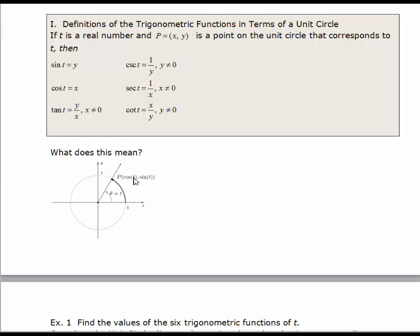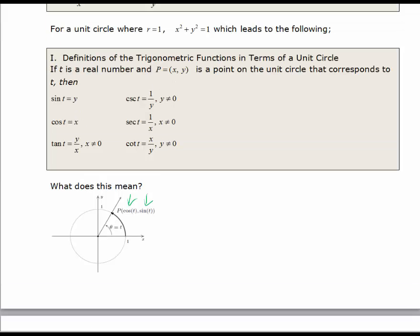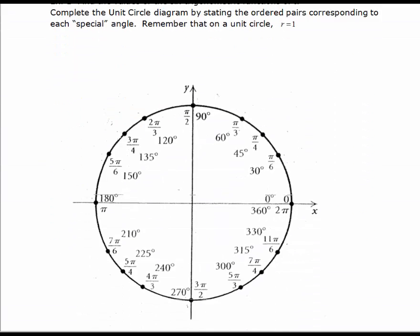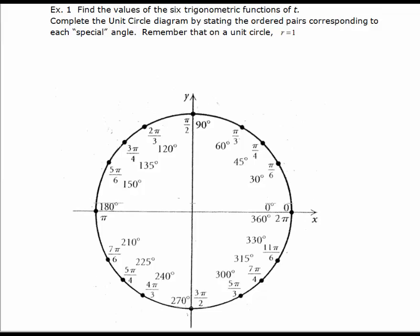What this means for the ordered pairs (x, y) on our circle is that for any ordered pair on a unit circle, the x-coordinate is the cosine of the angle and the y-coordinate is the sine of the angle. Let's look at the unit circle — I've got the circle we've used before, where we've marked all the multiples of the special angles and the quadrant angles.